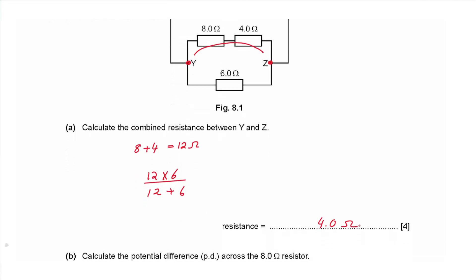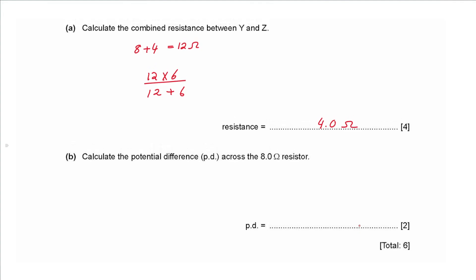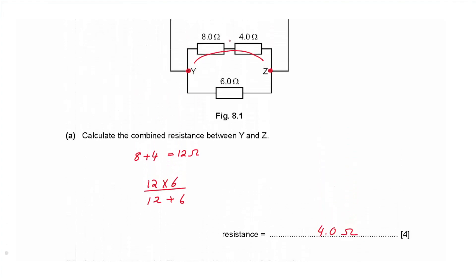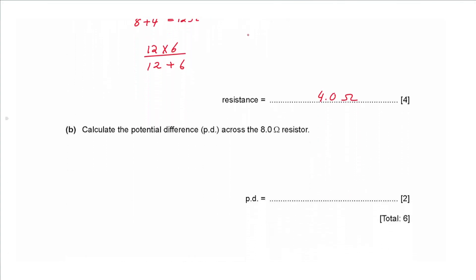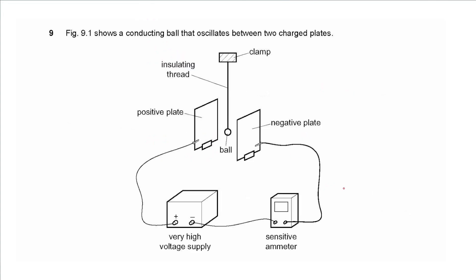Part b: calculate the potential difference across the 8 Ω resistor. The battery supplies 24 V across the series branch (8 Ω + 4 Ω = 12 Ω). Voltage is proportional to resistance in series: 24 × 8 ÷ 12 = 16 V.